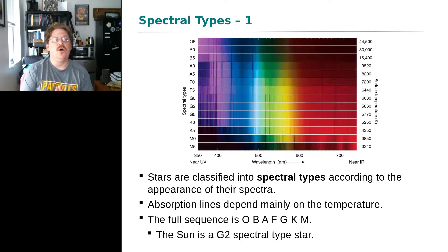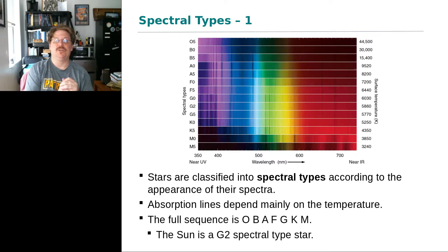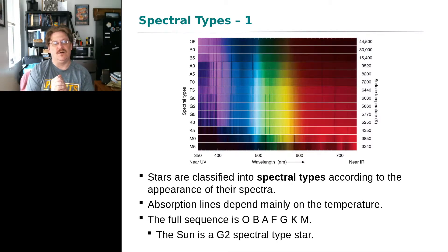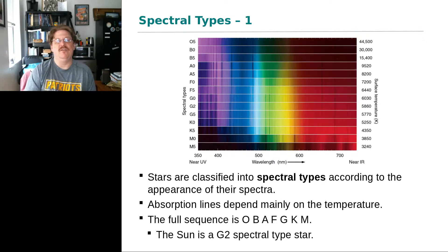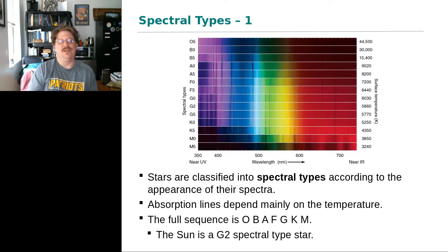Annie Jump Cannon recognized that the difference in spectra actually corresponded to differences in temperature. She reorganized the classification based on the peak wavelength of the stars, and using Wien's Law derived temperatures. She reordered the spectral types so that O is the hottest, then B, A, F, G, K, and M. These spectral types can be subdivided with numbers from nine down to zero — an A9 star is cooler than an A0 star. O stars only subdivide down to about five.